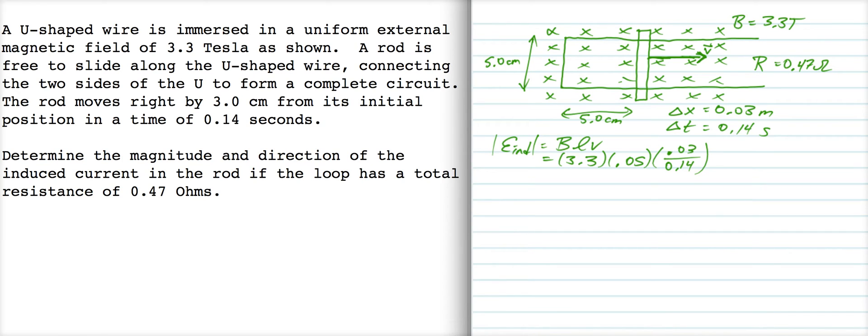We could also do this with flux, right? You could also say that it's equal to delta phi over delta T, and use B delta A over delta T, if you choose, but I'm just going to keep it simple and use BLV. So I get from this 0.035 volts.